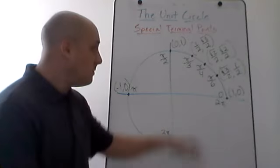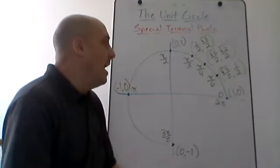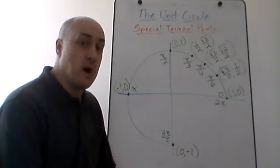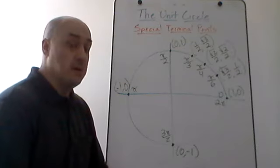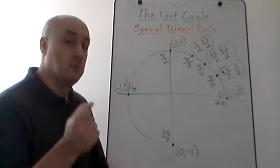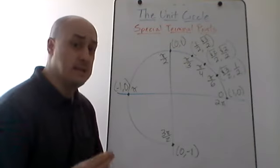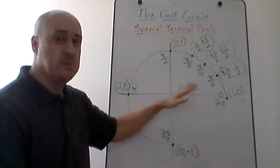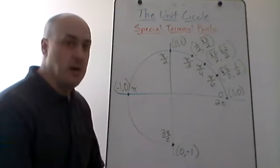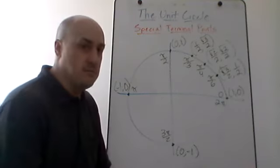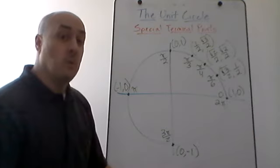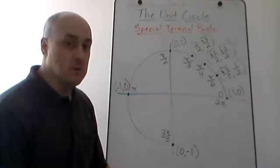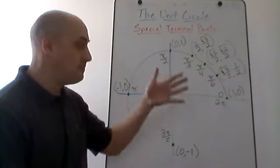It's really important to know those terminal points — those x and y coordinates for points in the first quadrant. It's one of those things you just need to be able to recall to memory pretty much instantaneously. The good news is you don't have to just memorize all these. There is a way to help you remember without memorizing, and we call it the trig hand.